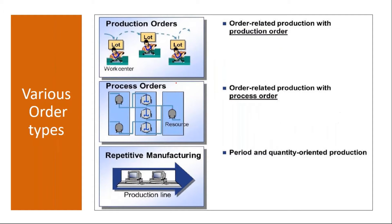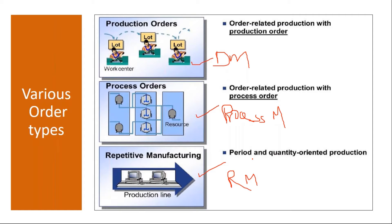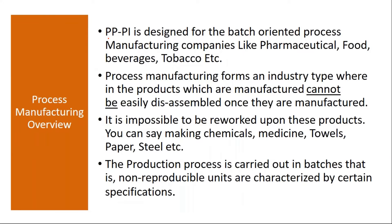So we have discrete manufacturing, process manufacturing, and repetitive manufacturing — repetitive manufacturing will be covered in a separate class. Today we are looking at process manufacturing. PPPA is designed for batch-oriented process manufacturing companies like pharmaceutical, food, beverage, and tobacco industries.